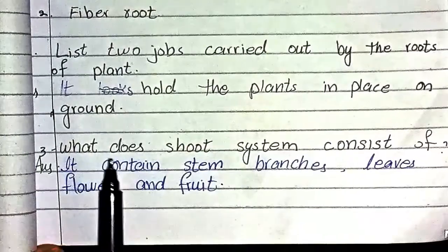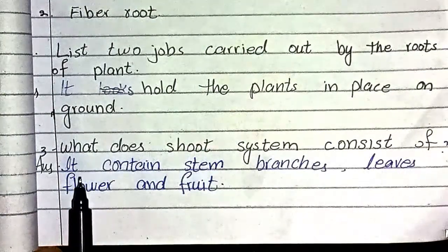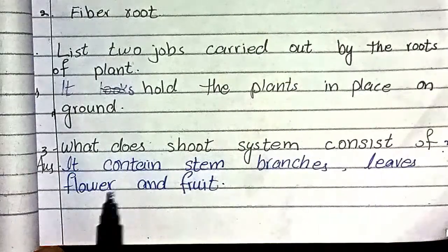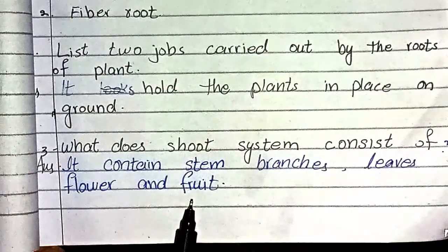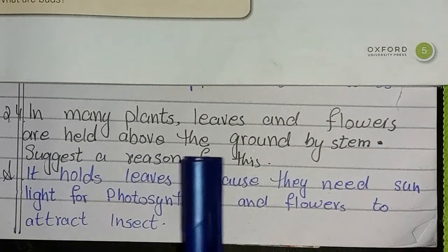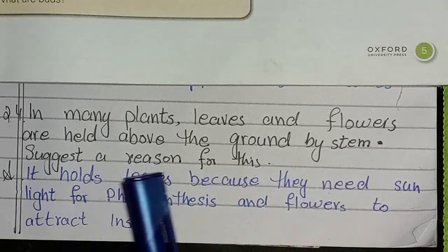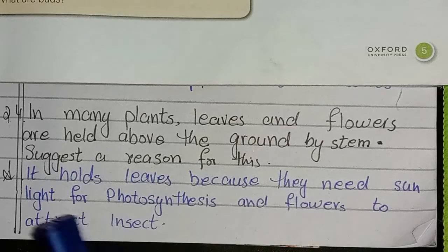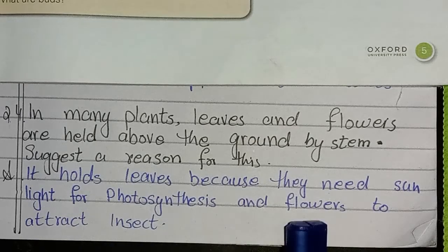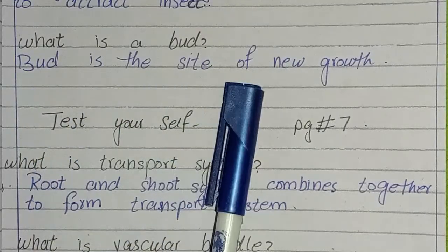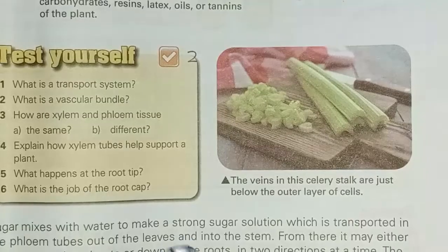Third question: What does the root system consist of? It contains branches, leaves, flower, and fruit. In many plants, leaves and flowers are held above the ground by stems. The reason for this is it holds them because they need sunlight for photosynthesis and flowers to attract insects. Last question: What are buds? A bud is the site of new growth.